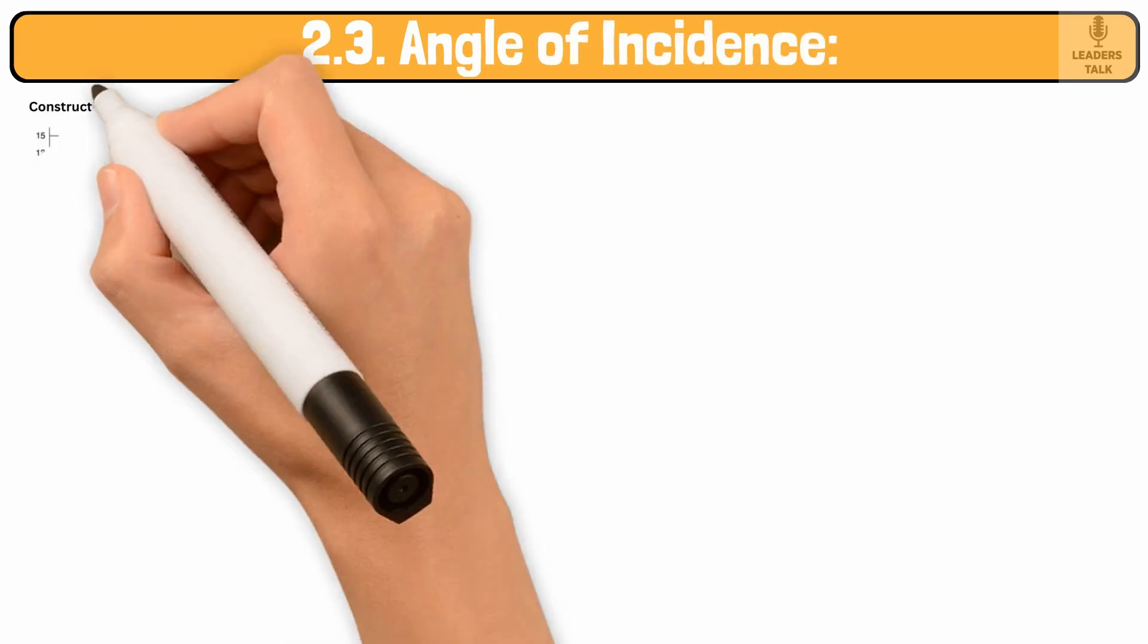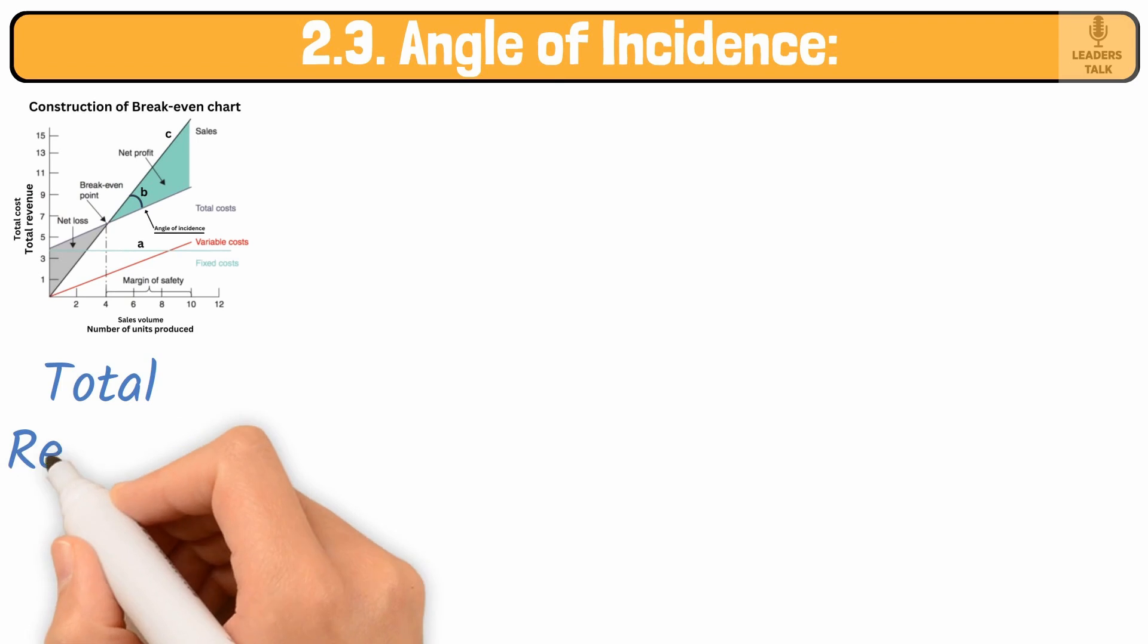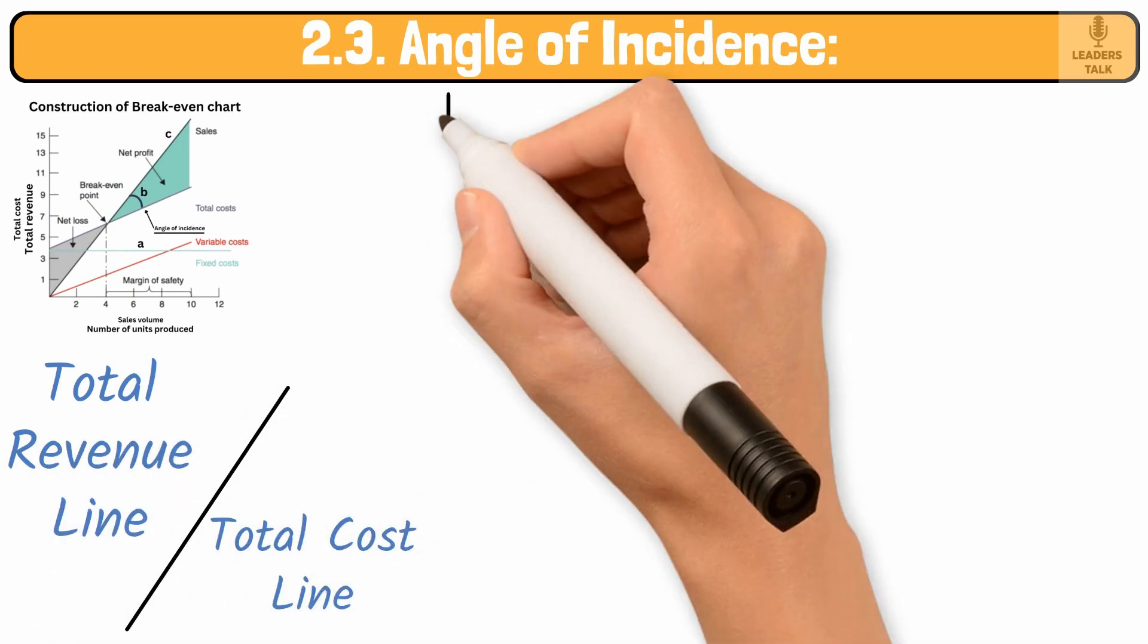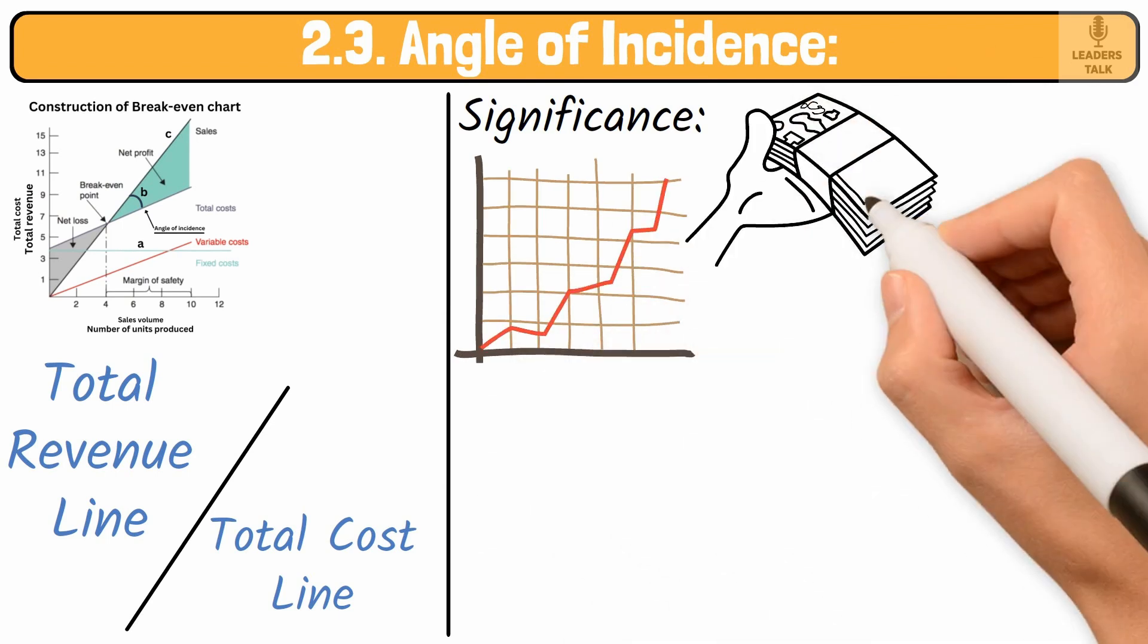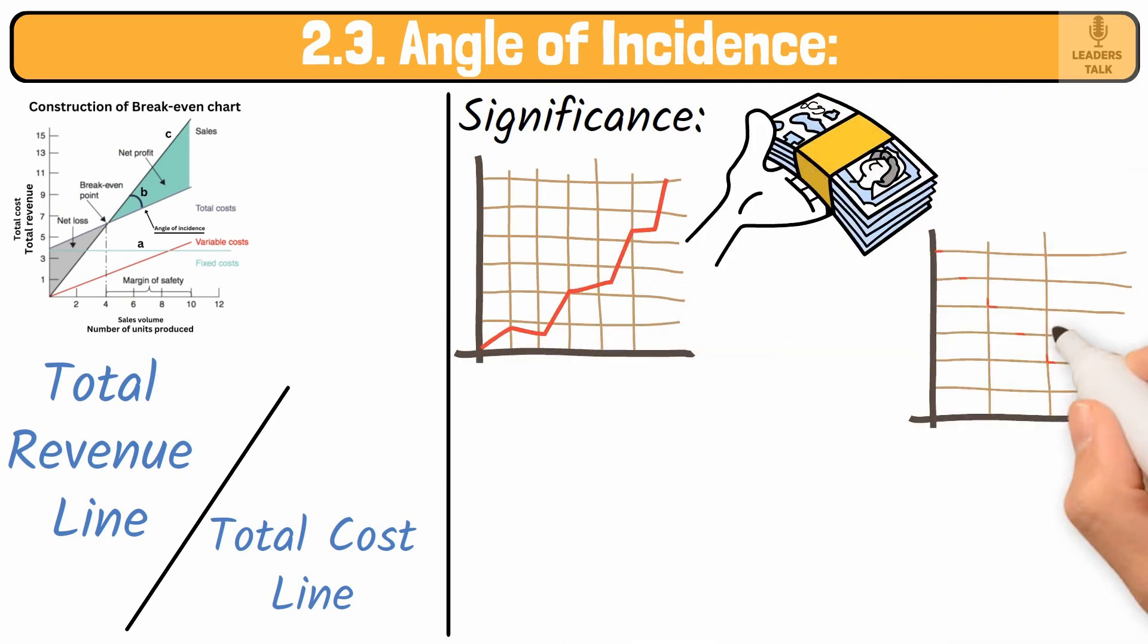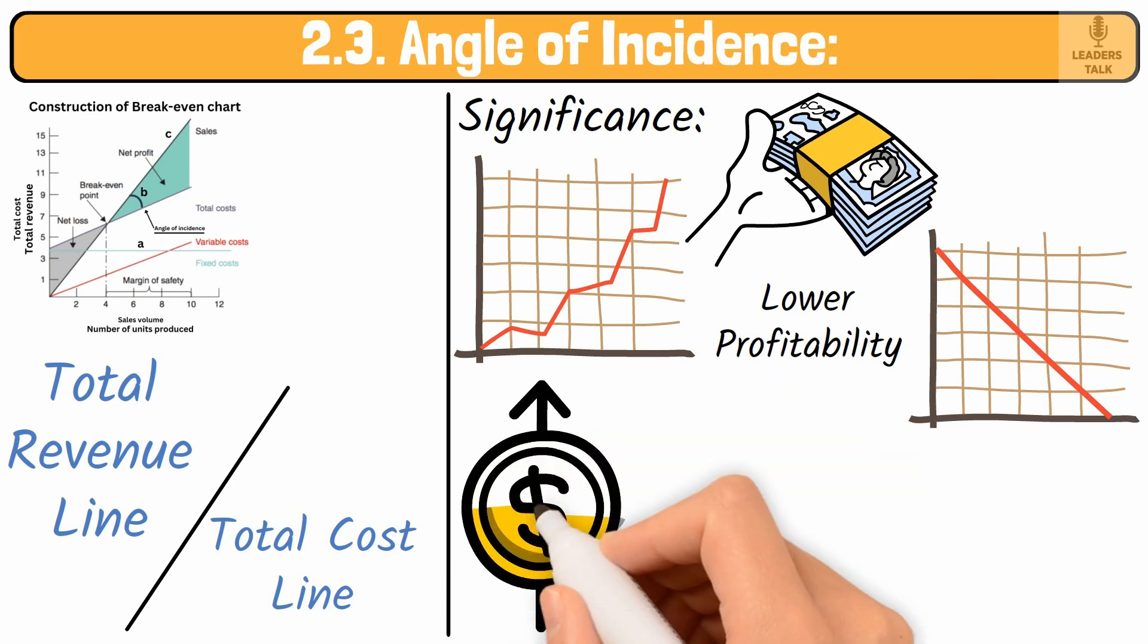Angle of incidence. The angle of incidence on the breakeven chart is the angle between the total revenue line and the total cost line beyond the breakeven point. Significance: a steeper angle indicates higher profitability per unit. A flatter angle suggests lower profitability, requiring higher sales volume to achieve significant profit.